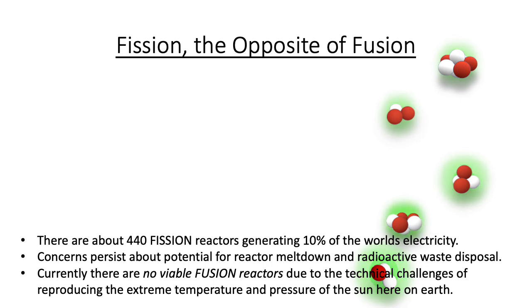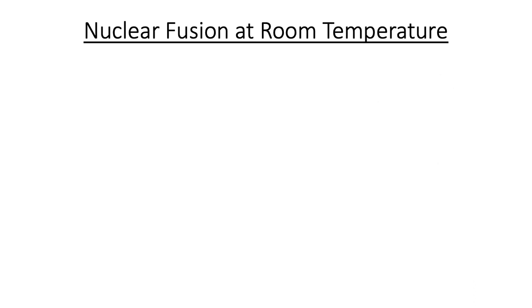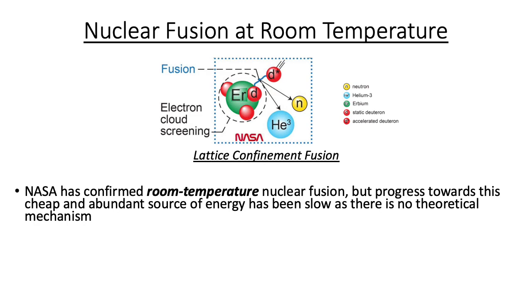While fusion is potentially a much cleaner and safer alternative, currently there are no viable fusion reactors due to the technical challenges of reproducing the extreme temperatures and pressures of the Sun here on planet Earth. There may be another way: nuclear fusion at room temperature. First reported decades ago, NASA has recently confirmed evidence of nuclear fusion at room temperature. This type of power is still decades away, however, because scientists are essentially guessing at a mechanism for how two nuclei might combine at such low temperatures.